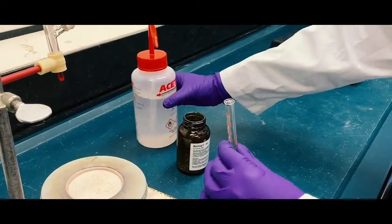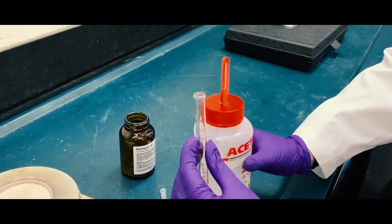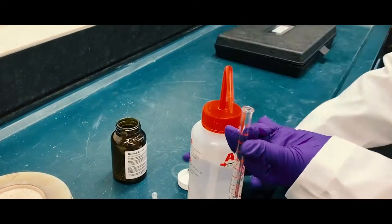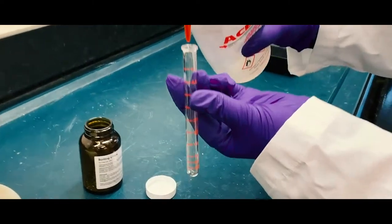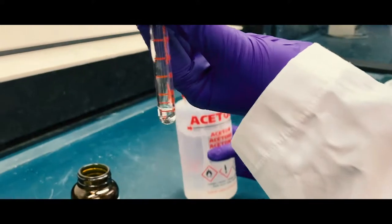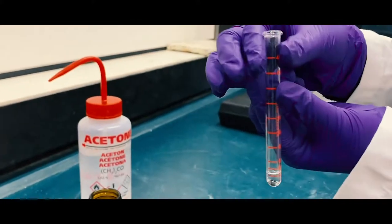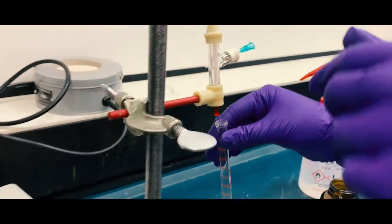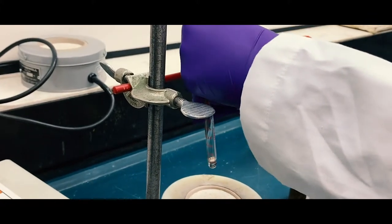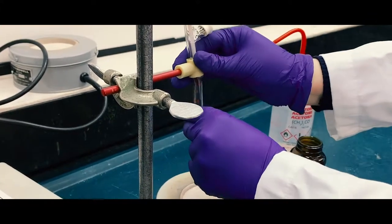Then add about half a milliliter of the liquid, which is acetone. Attach the test tube to the boiling point apparatus.